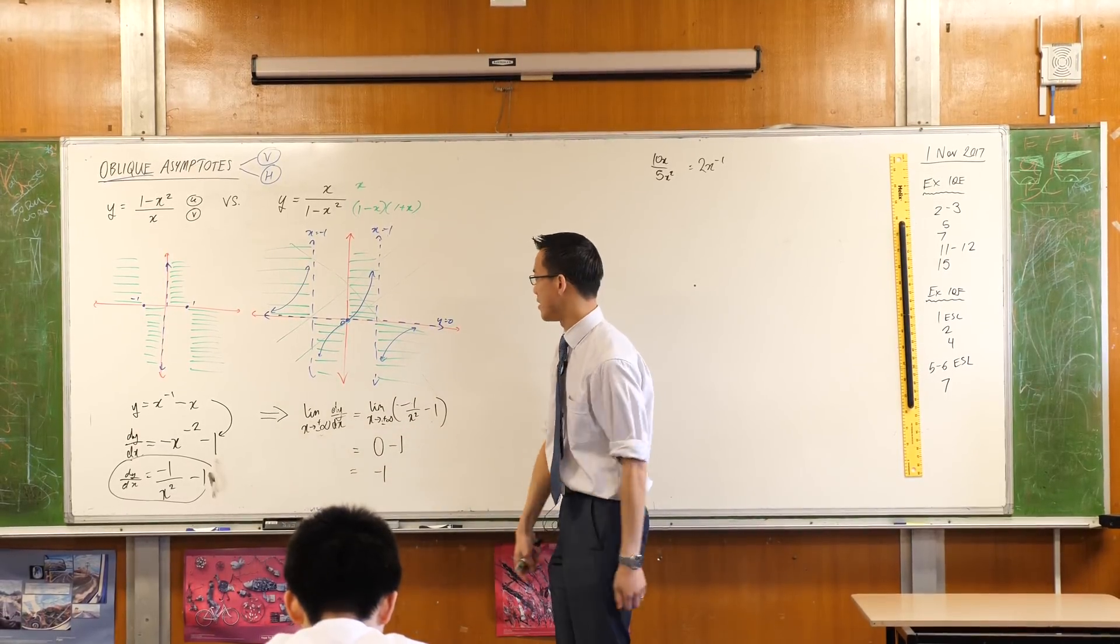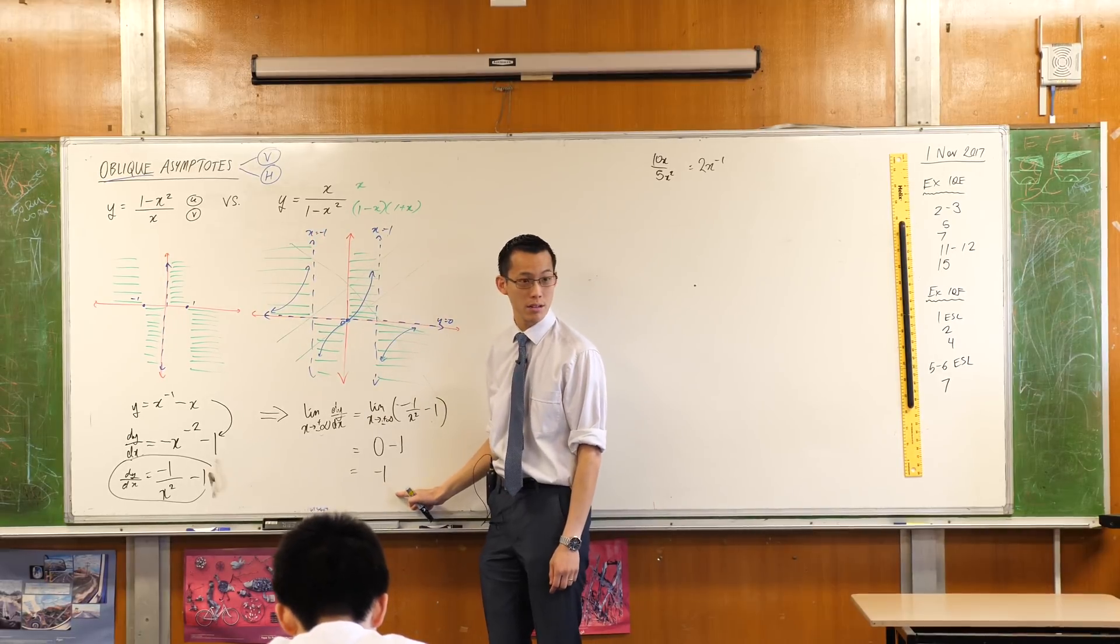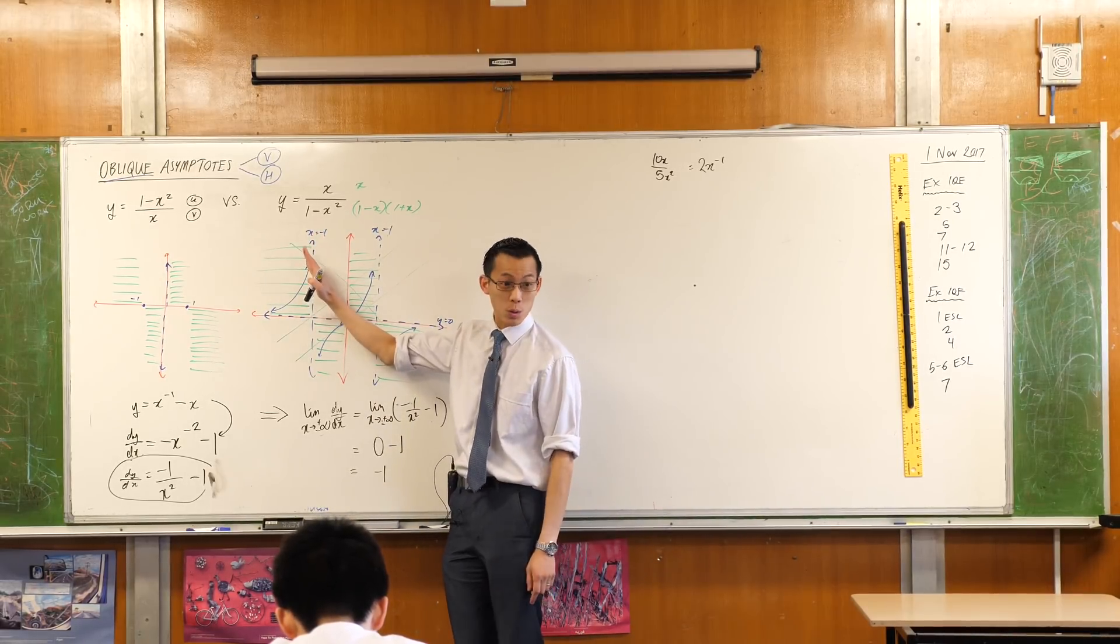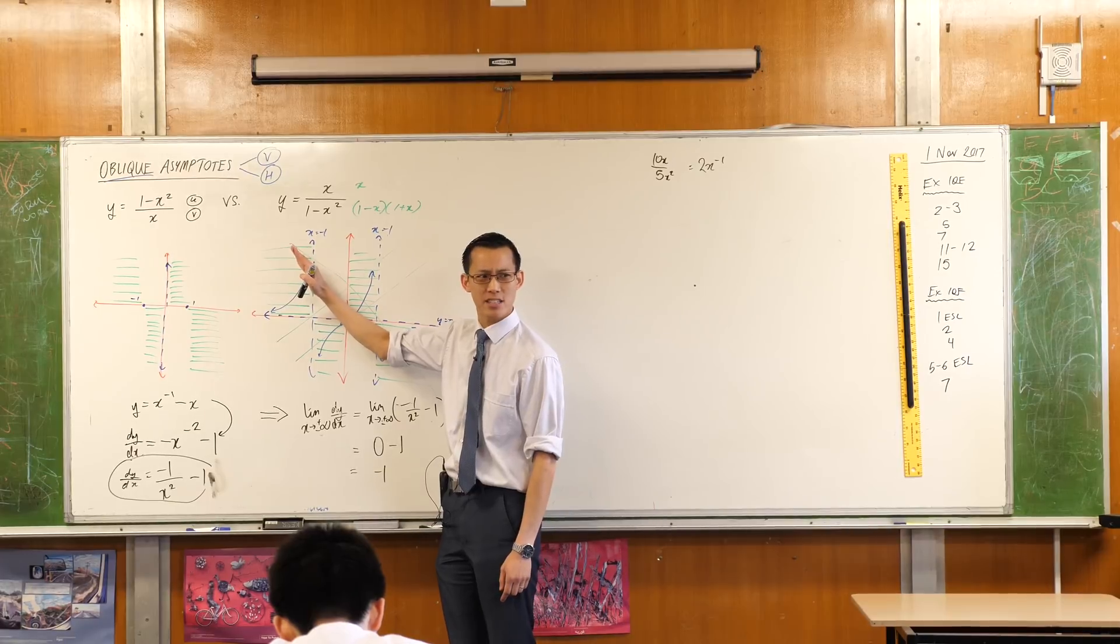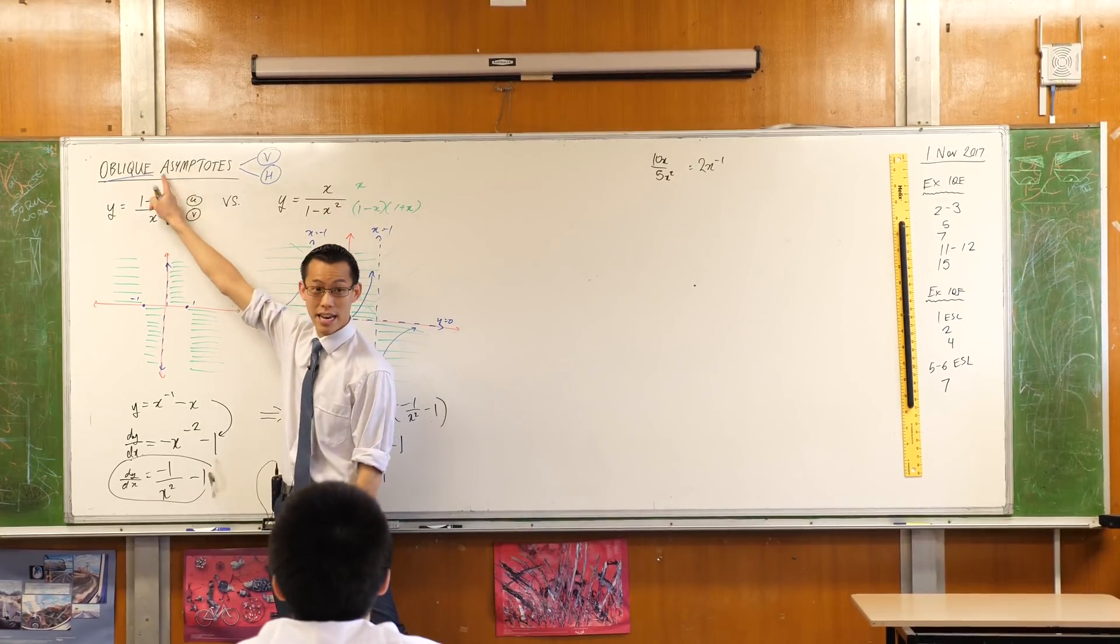Because see this line, this is 1 minus x, it's got the right gradient, but minus x also has the right gradient, and minus x minus 1 also has the right gradient. So which of these is the oblique asymptote?